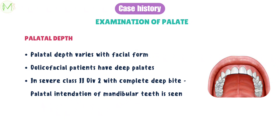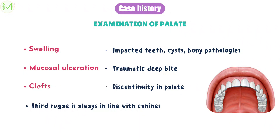The next thing we need to examine is the palate. Palatal depth is important here. Palatal depth varies with facial form, where dolichofacial patients have deep palates. In severe Class 2 Division 2 conditions with complete deep bite, we can appreciate the palatal indentations of mandibular teeth. We need to check for any swelling on the palate which might be indicative of impacted teeth, cysts, or any bony pathologies. Mucosal ulceration can also be present as a result of dramatic deep bite, and clefts can be seen as discontinuity in the palate. Also, the third rugae is always in line with the canines, so with the help of this we can appreciate the proclination of the anteriors. We should also look for any post-surgical scar tissue which might restrict maxillary growth and diminish the prognosis for development of the maxillary arch.